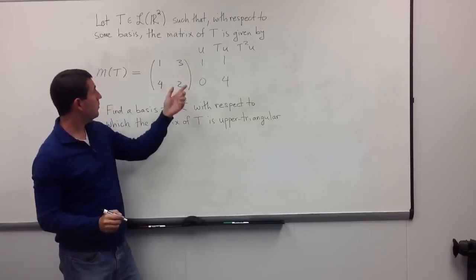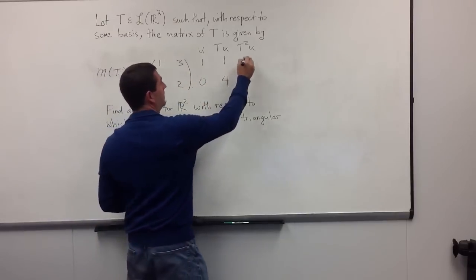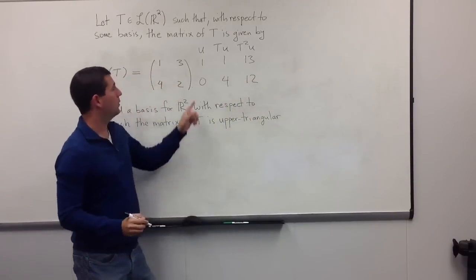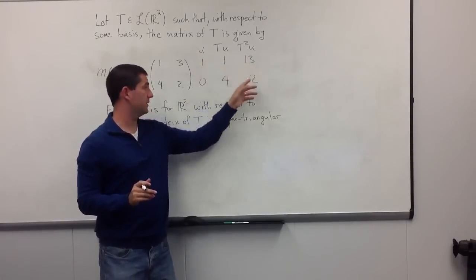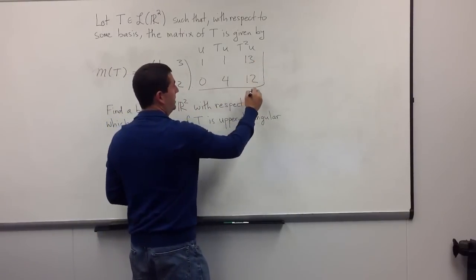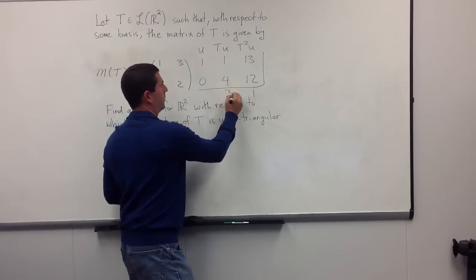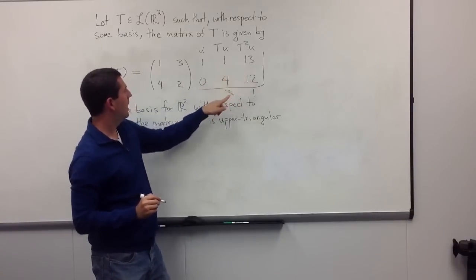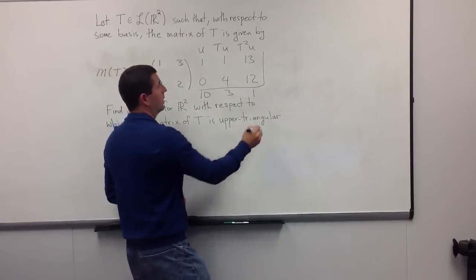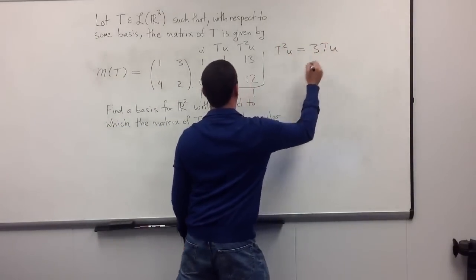We've got to keep going and find T²u. Applying the matrix to (1, 4) gives me (13, 12). Since u and Tu already form a basis for R², we must now have a linearly dependent list. To express T²u in terms of Tu and u: I need 3 copies of Tu to get the 12 in the second component, and then 10 copies of u to account for the 13 in the first. So T²u = 3Tu + 10u.